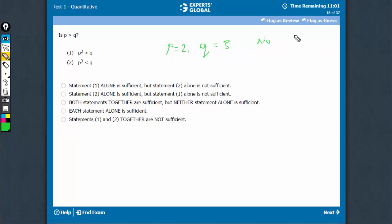And if we put P = 4 and Q = 3, P² is greater than Q and P is also greater than Q, so we get yes. No and yes both are possible, therefore statement 1 is not sufficient.